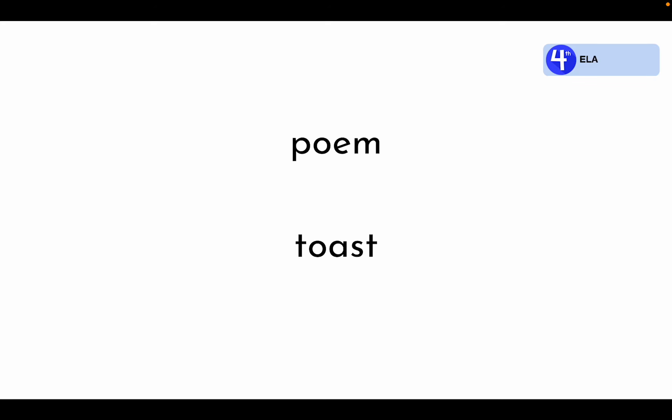On the screen we have two words: poem and toast. Let's take a look at the word poem. Po-em. Poem. In the middle of the word we have two vowels, o and e. When we break this word into its syllables, we are going to divide the word in between the two vowels. Po-em. Poem.